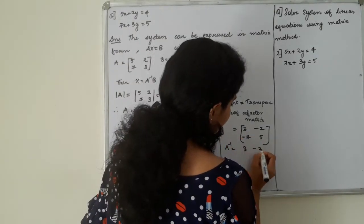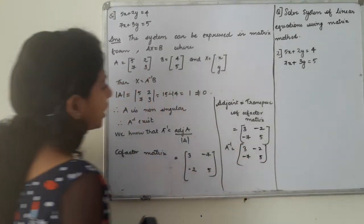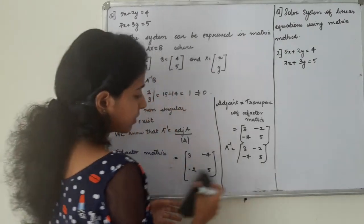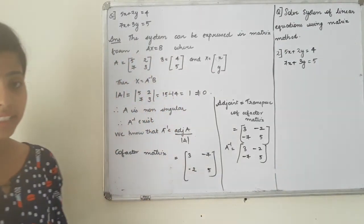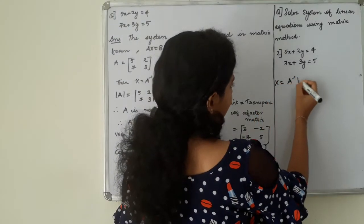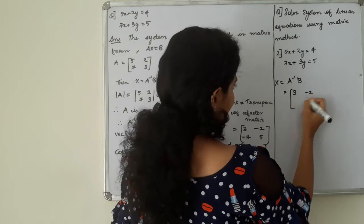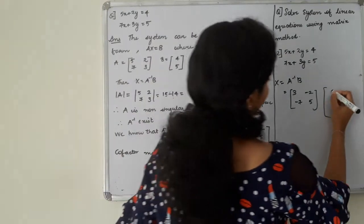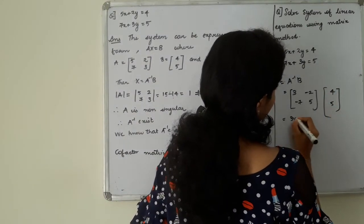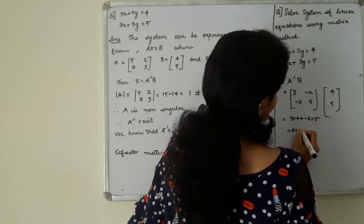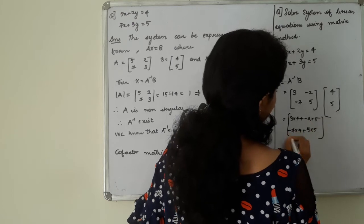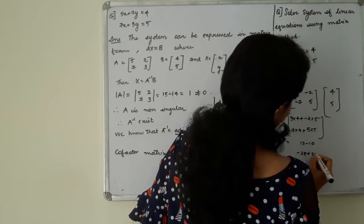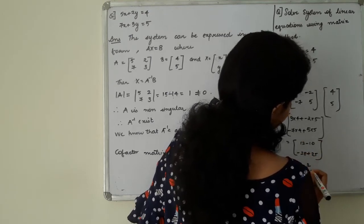Adjoint A. X to the order A inverse B. A is 3 minus 2 minus 7 is 5. B is 4 is 5. Solving, 3 into 4 plus minus 2 into 5 minus 7 into 4 plus 5 into 5. That is 12 minus 10 minus 28 plus 25. That is 2 into 1 minus 3.